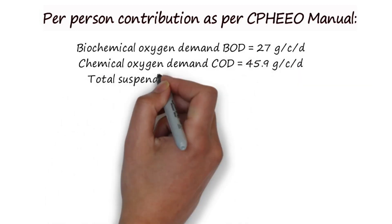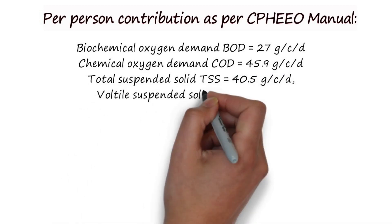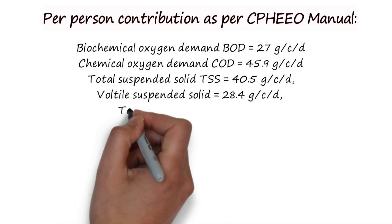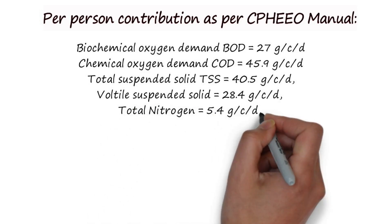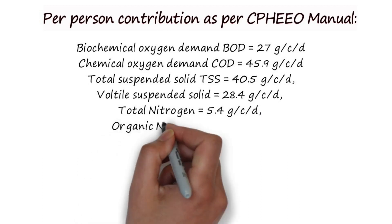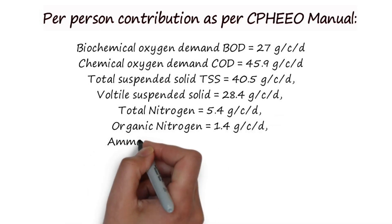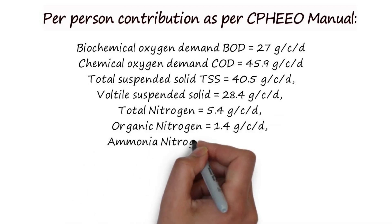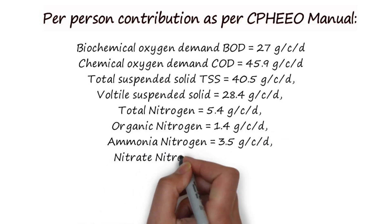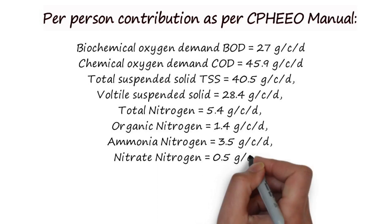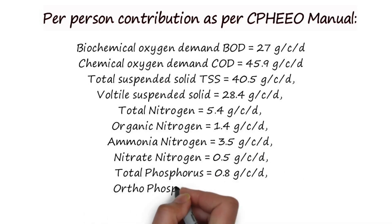Total suspended solid TSS is 40.5g per capita per day. Volatile suspended solid is 28.4g per capita per day. Total nitrogen is 5.4g per capita per day. Organic nitrogen is 1.4g per capita per day. Ammonia nitrogen is 3.5g per capita per day. Nitrate nitrogen is 0.5g per capita per day. Total phosphorus is 0.8g per capita per day, and orthophosphorus is 0.5g per capita per day.